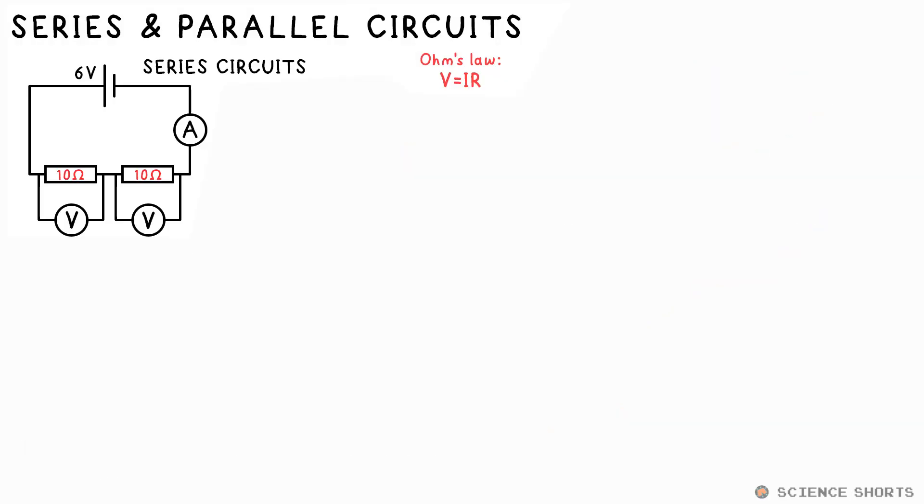Here's the simplest series circuit we can make. Just two resistors in line with the battery. What you need to remember is that for components in series, total PD is shared between them. Current is the same for all of them. And the total resistance is just the sum of all the resistances. They're just added up.